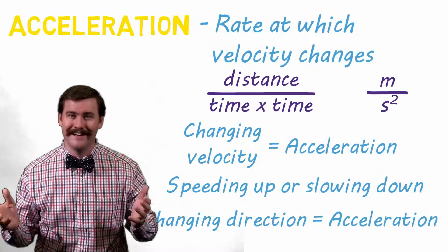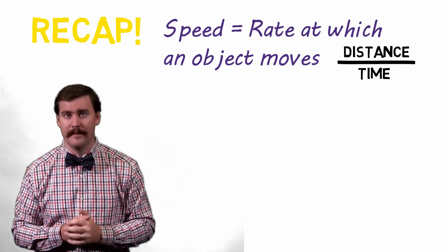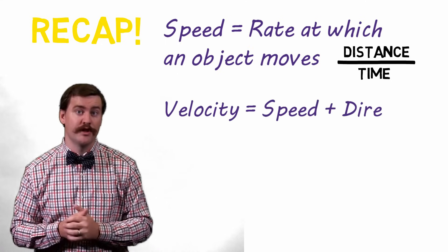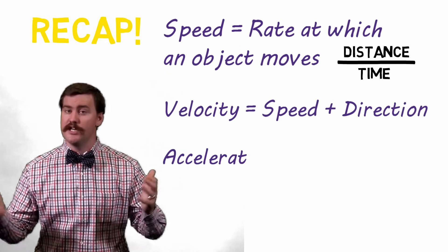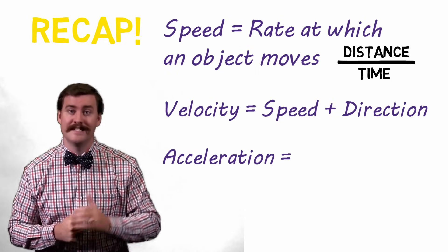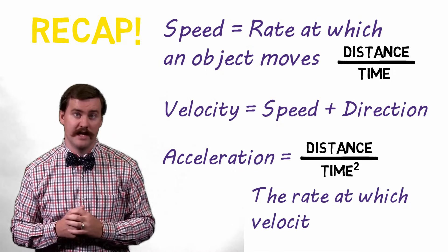Does that blow your mind? Alright, let's recap. Speed is the rate at which something moves, distance over time. Velocity is speed with a direction, so distance over time with a specific direction. And acceleration, the king of them all, is distance over time squared, or the rate at which velocity changes.